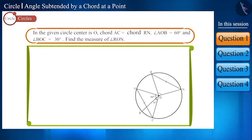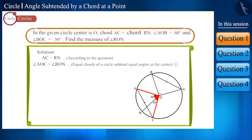We are given that chords AC and RN are equal. So, the angles AOC and RON will also be equal, because equal chords of a circle subtend equal angles at the centre. And if we look at the figure here, angle AOC is made up of angle AOB and angle BOC combined together.